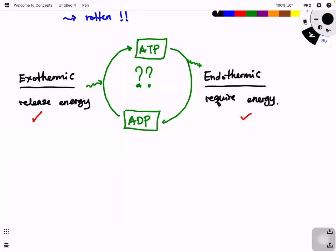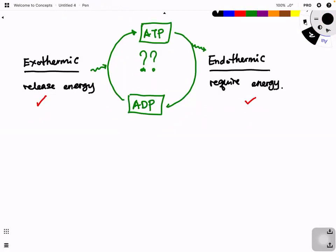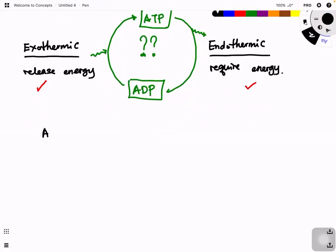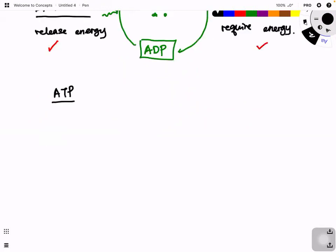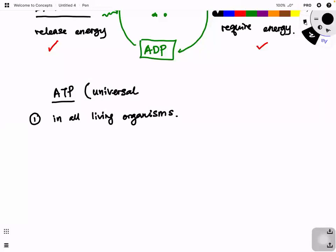Why is ATP termed a universal energy currency? First, you can find ATP in all living organisms - in humans, animals, plants, and bacteria - we all use the same thing as the energy currency. That is why we call it universal. The first part of its role as energy currency is that all living organisms use this ATP.